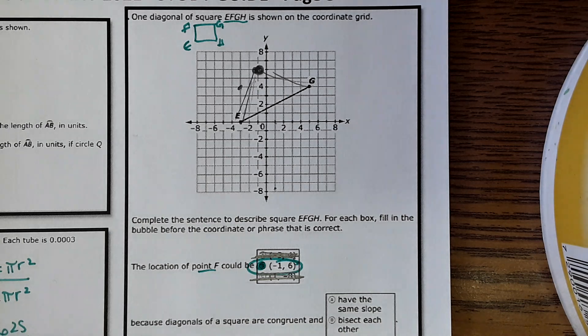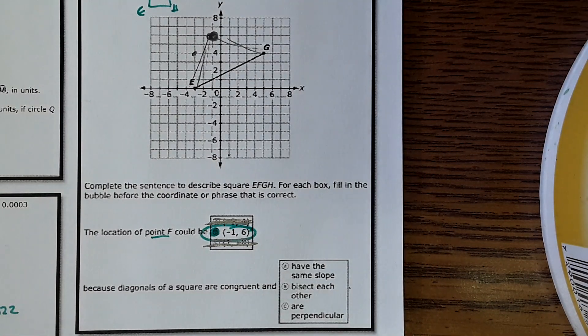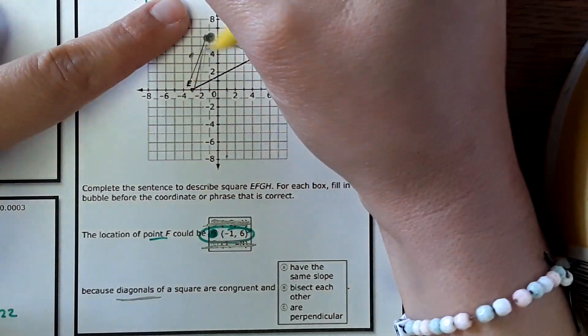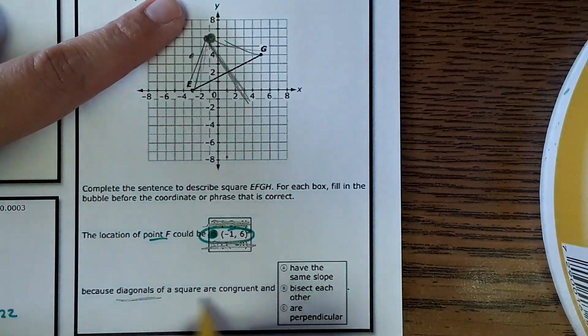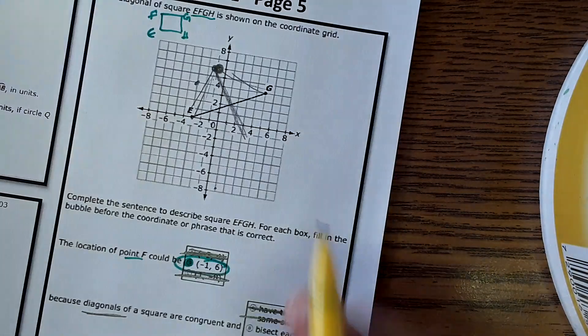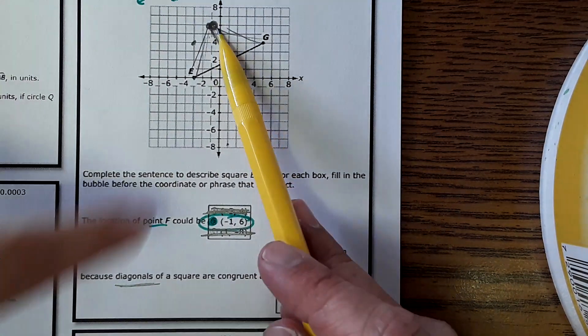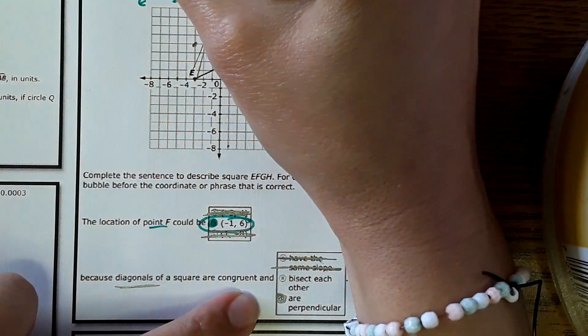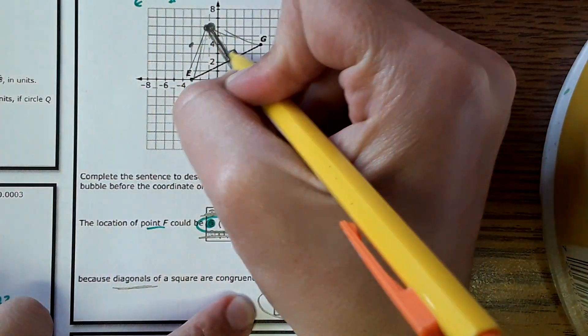Okay. And then from here, it says, why is that answer correct? It says have the same slope. Well, and it's talking about diagonals. So if you were to draw a diagonal here, what would happen? Okay. Diagonals of a square wouldn't have the same slope. They're actually perpendicular, so they wouldn't have the same slope. Bisect each other. Maybe and probably, but that's not what we would be proving here. Are perpendicular. We could prove that this is perpendicular to this. Like that. So this is the answer. The diagonals would be perpendicular. Okay.